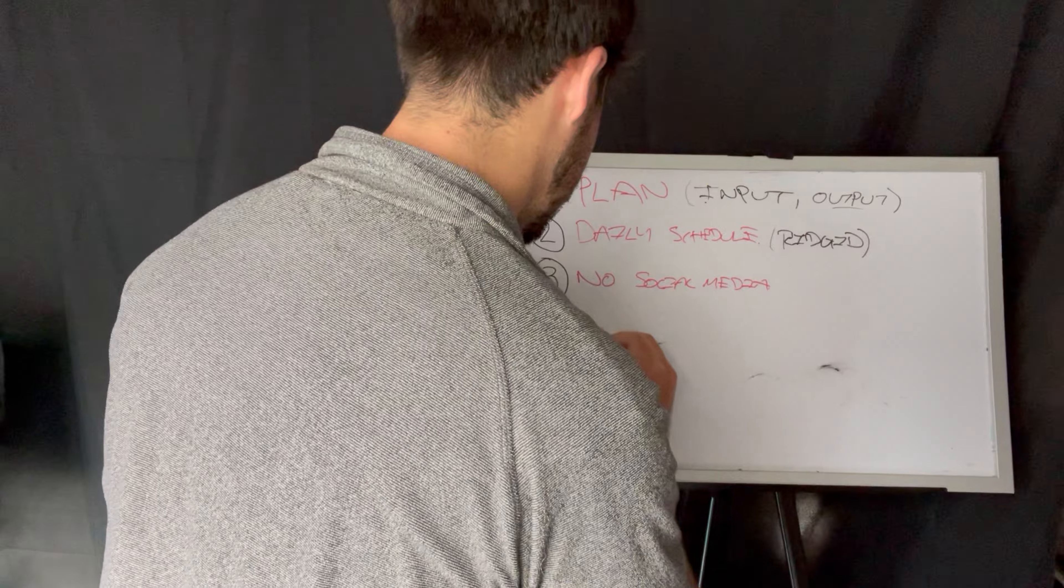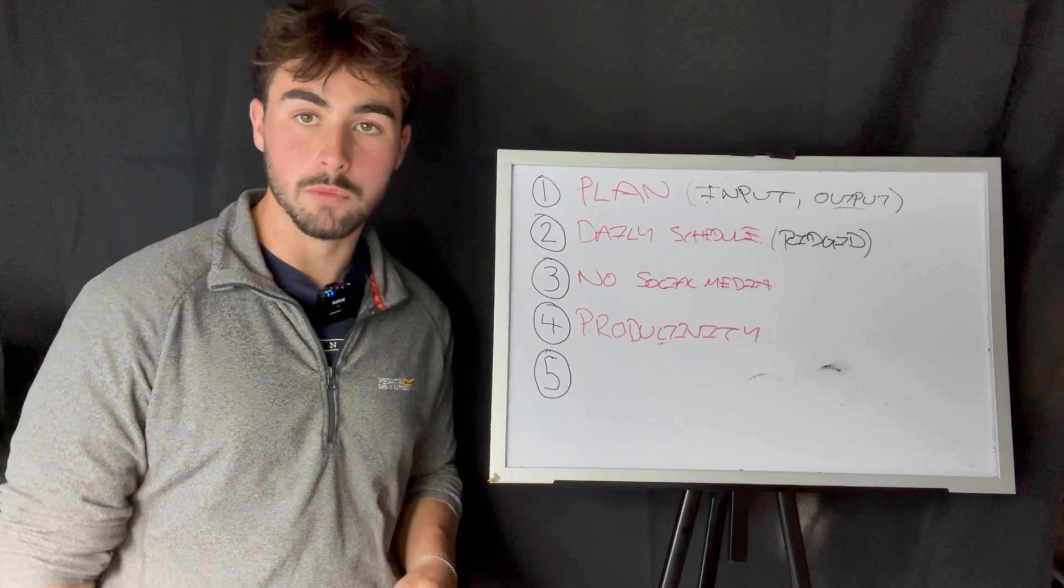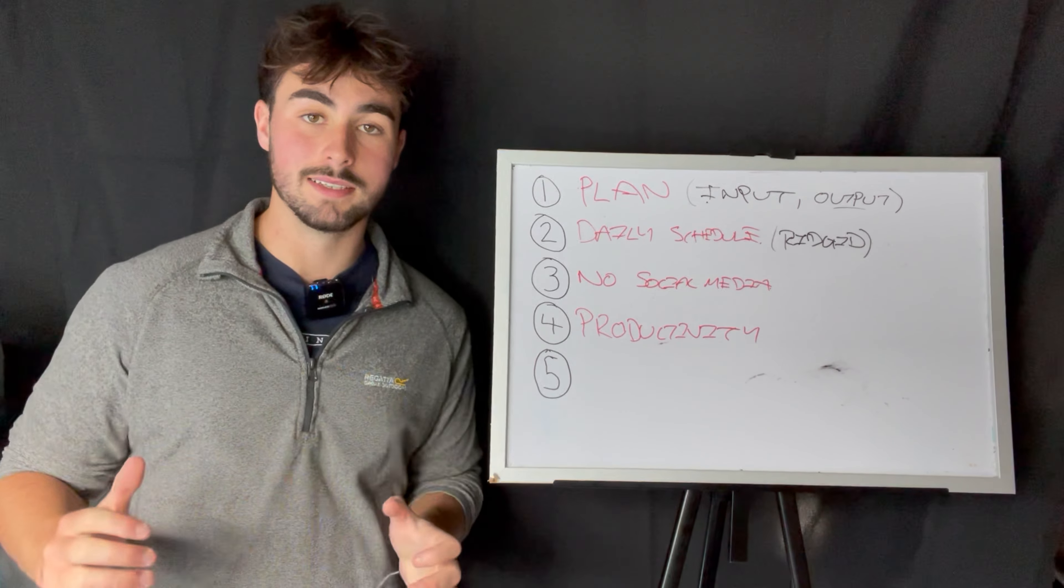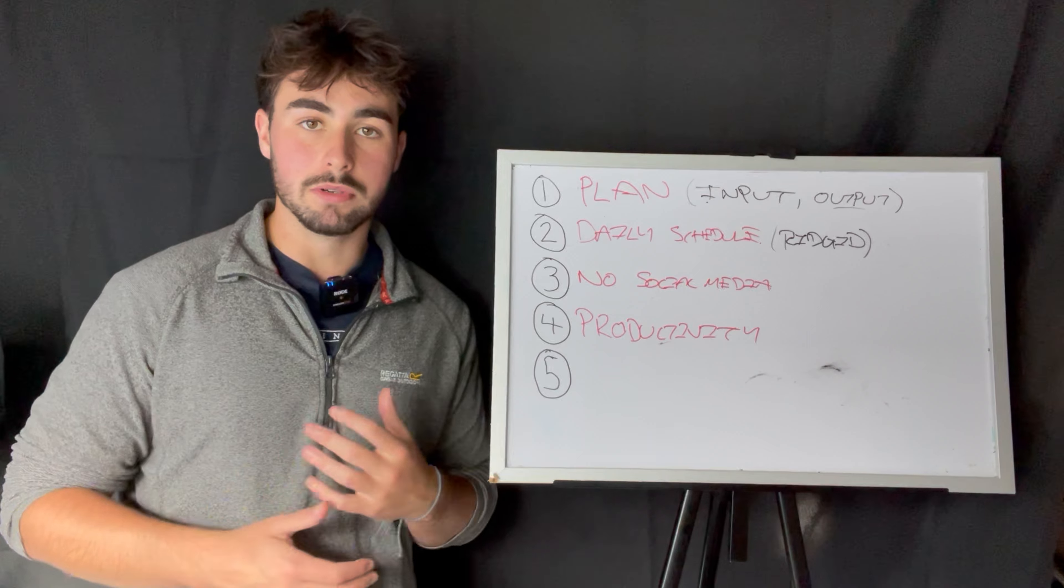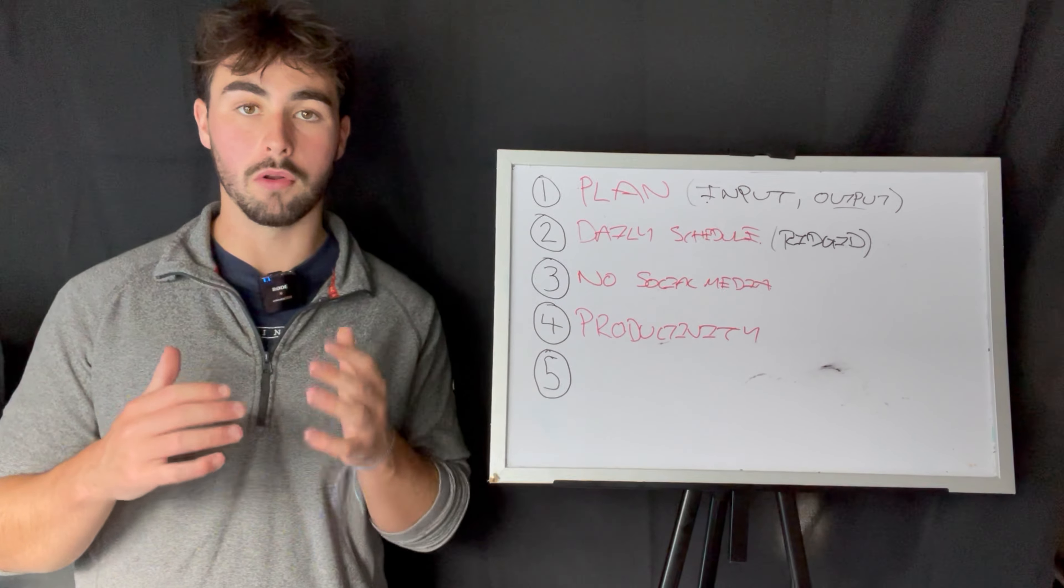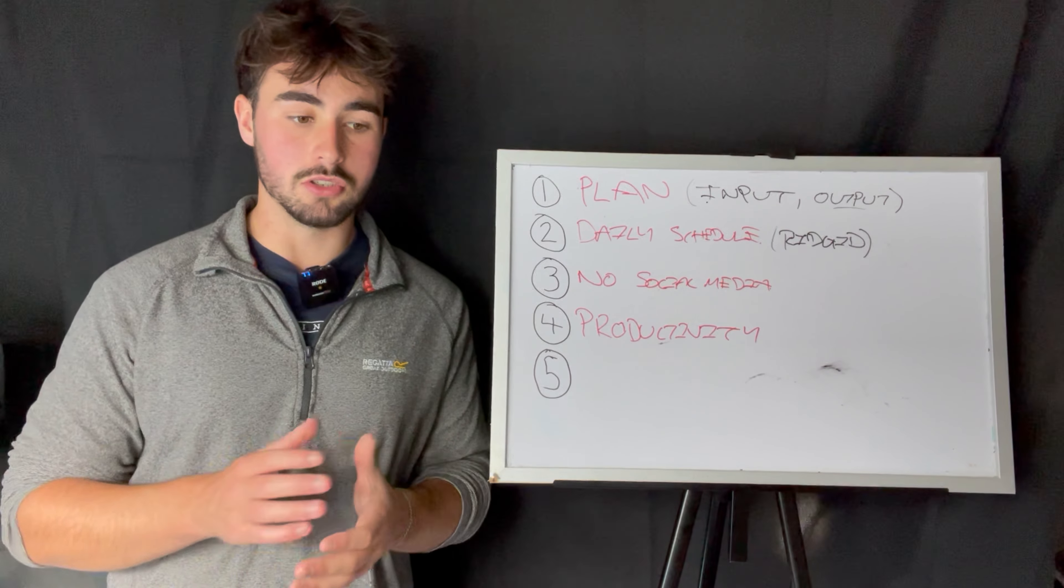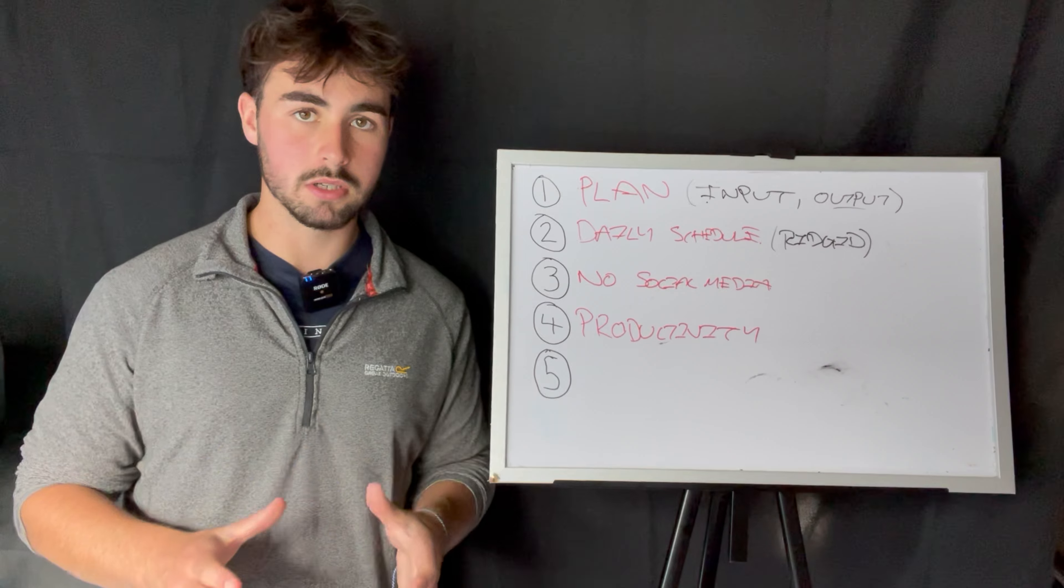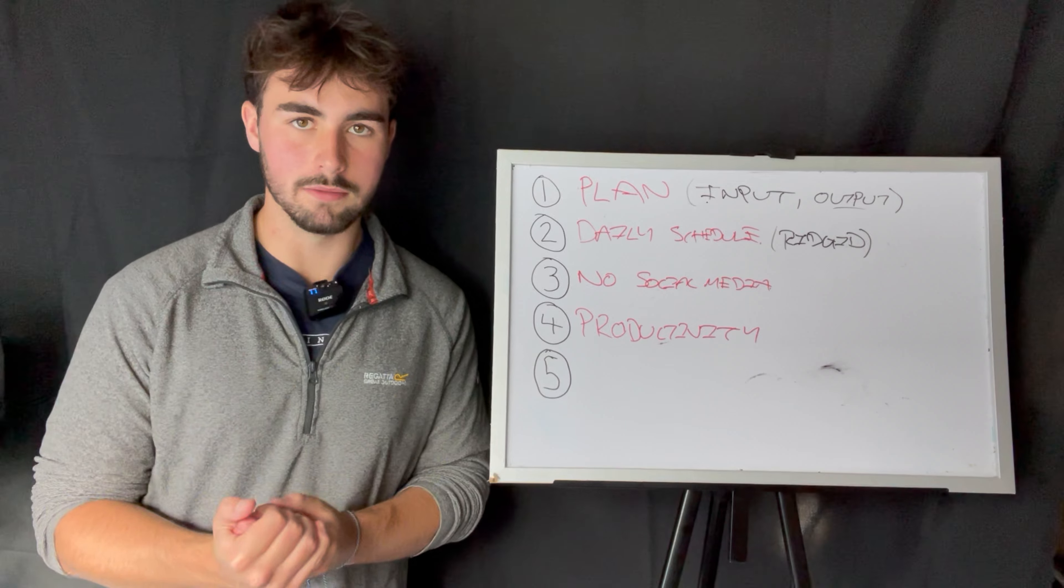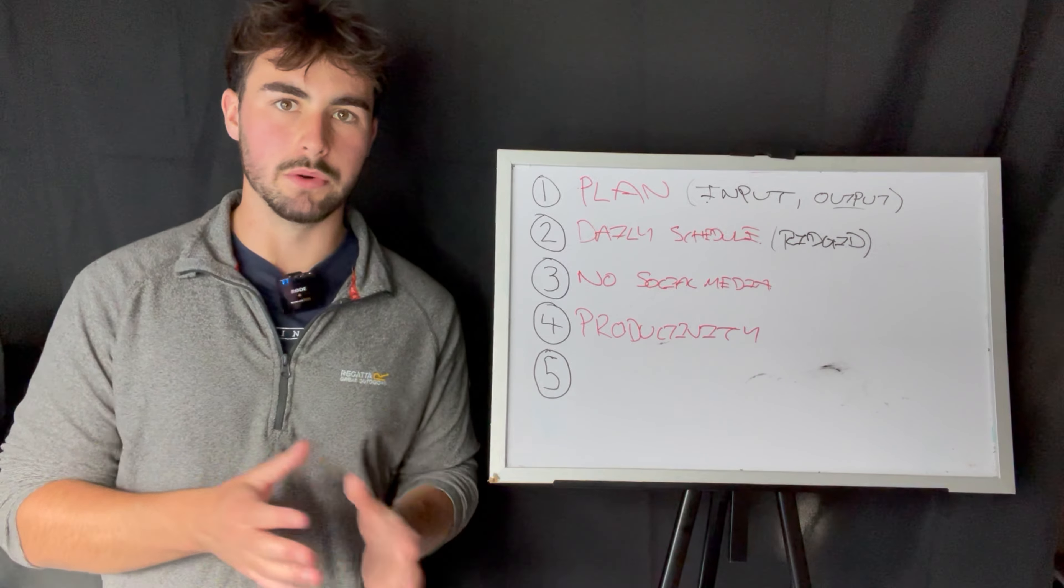Let's get into number four: productivity. There is so much to know about productivity. Once you get down the rabbit hole of productivity, it is crazy how people become productive. I'm going to make a full video on productivity, but all you need to know for now is just Google search, read books like Deep Work by Cal Newport.